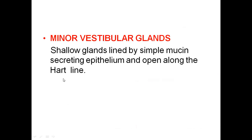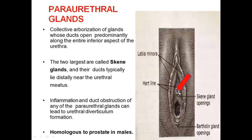Apart from this, we also have minor vestibular glands, which are shallow glands lined with simple mucin-secreting epithelium and open along Hart's line. Para-urethral glands are present on either side of the opening of the urethra. These are Skene's glands — a collective arborization of glands whose ducts open predominantly along the entire inferior aspect of the urethra. The two largest are the Skene's glands and the ducts typically open near the urethral orifice. Inflammation and duct obstruction of any of the para-urethral glands can lead to urethral diverticulum formation. It is homologous to the prostate in males.